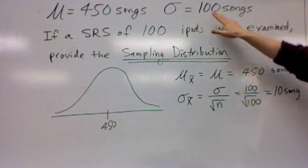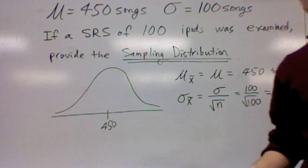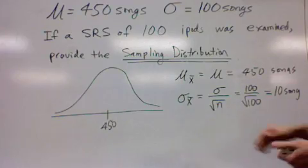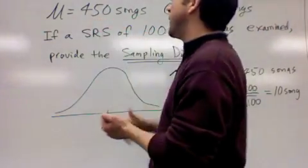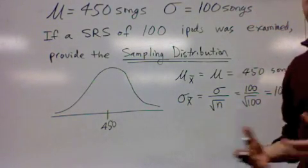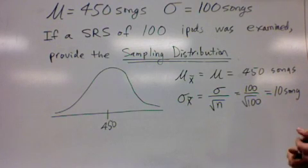Looking at individual iPods, the standard deviation is 100, which means it's very widespread. It's very common that if you looked at an individual's iPod, you get maybe between 350 to 550 on the playlist or in the menus.